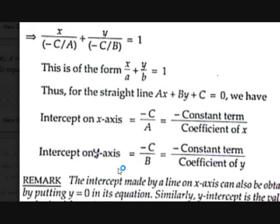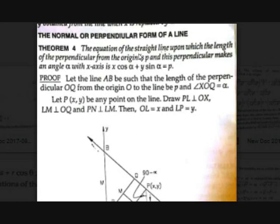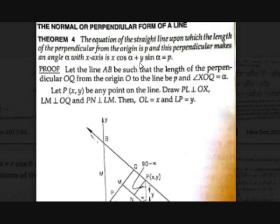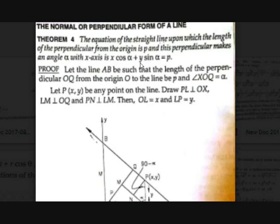Now let's see the normal or perpendicular form. The equation of the straight line upon which the length of the perpendicular from the origin is p, and this perpendicular makes an angle alpha with the x-axis, is x·cosα + y·sinα = p.